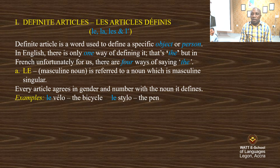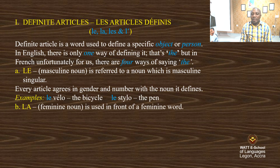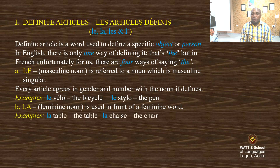All this that we are seeing now is also in your book. So when you get the Year Seven book, as you read, you follow the video and you do the activities in the book. La is used for a feminine noun — it's used in front of a feminine word. Example: la table; la chaise — the chair.